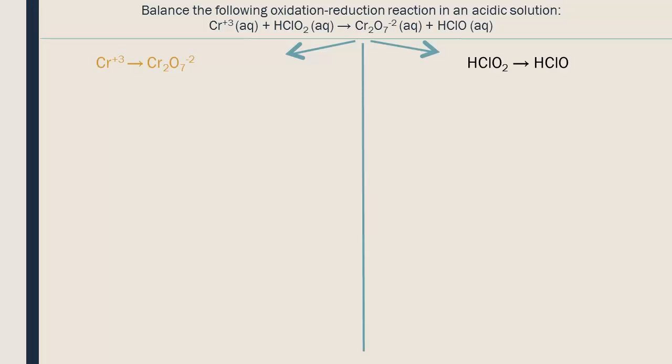Let's start by balancing the reaction on the left. We start by balancing the elements other than oxygen and hydrogen. Here, there are two chromiums in the products and only one in the reactants. So we multiply the chromium ion on the left by two.